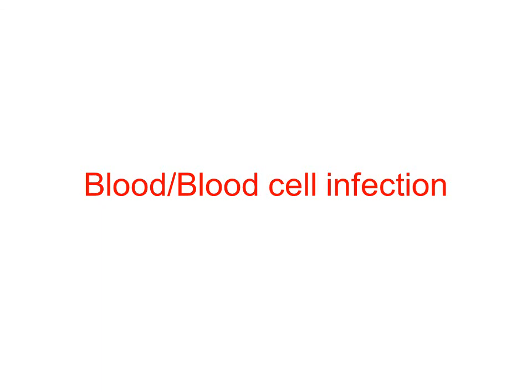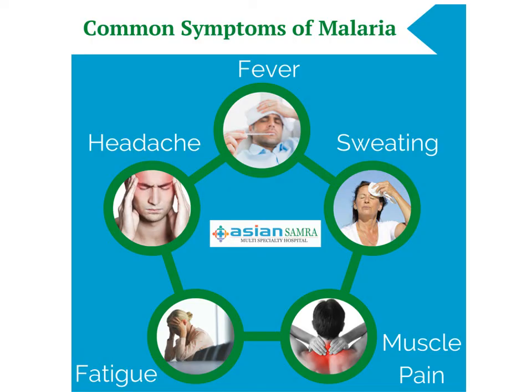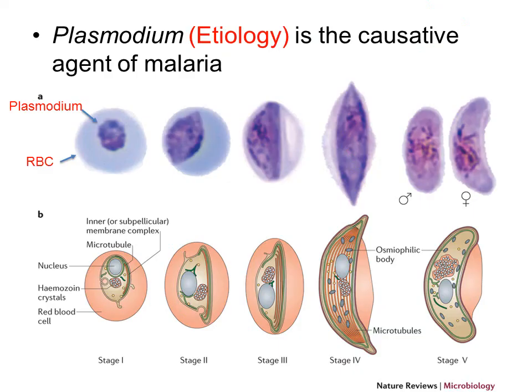Now we are going to talk about blood and blood cell infections. Common symptoms of malaria are fever, headache, sweating, muscle pain, and fatigue. You get malaria from a protozoa called plasmodium — it is the causative agent of malaria. In the picture, we are looking at a red blood cell with this protozoa inside of it.